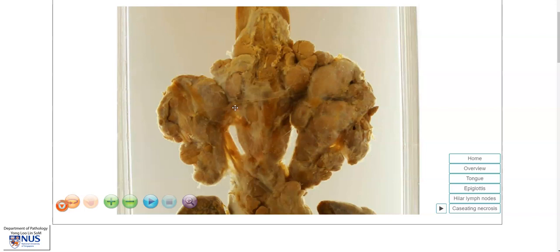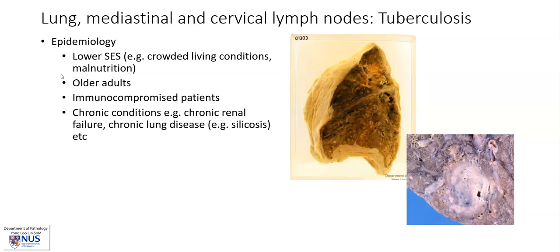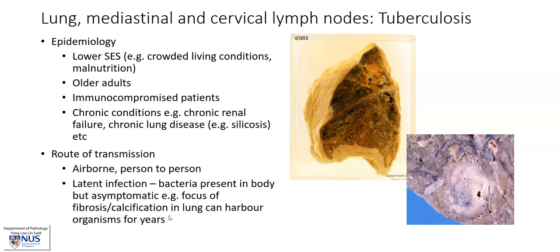Let's learn a little bit more about TB. TB tends to occur in lower socioeconomic status settings, for example in crowded living conditions as well as in the setting of malnutrition, and this is because of person-to-person transmission. It also tends to occur in older adults and immunocompromised patients as well as those with long-standing chronic conditions such as chronic renal failure or chronic lung disease. The route of transmission is airborne from person-to-person, and the bacteria can actually remain latent for years in the body, for example in an old focus of infection that has become fibrotic or calcified.